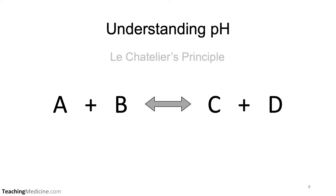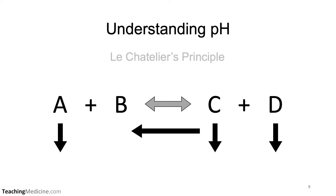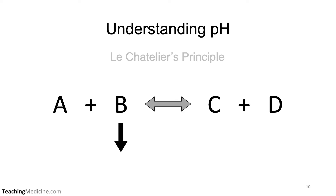In order to understand pH, we have to understand a tiny bit of chemistry. In this chemical equation, we have two compounds: A plus B are combining to create C plus D. If we reduce the concentration of compound A, the equation will shift to the left, and this will reduce the concentrations of compounds C and D. The same is true for compound B — if we reduce compound B, the equation will shift to the left and will reduce the concentrations of compounds C and D also.